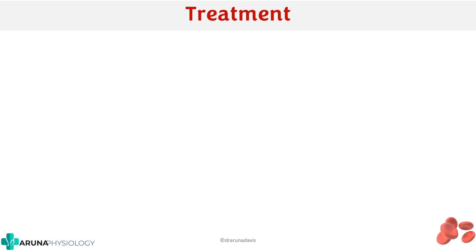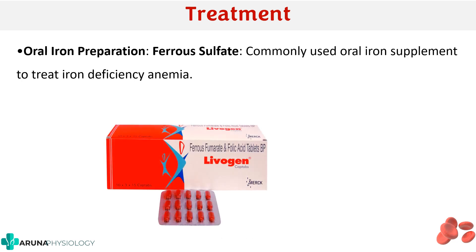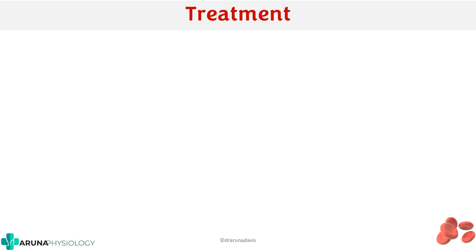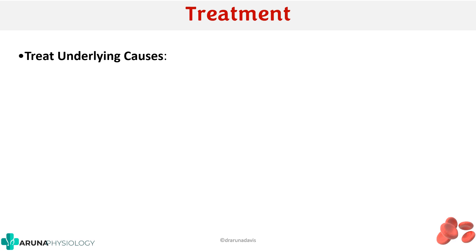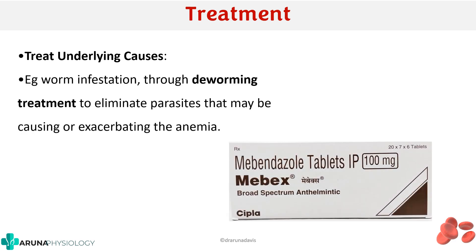The most common treatment is oral iron supplements, such as ferrous sulfate, for those diagnosed with iron deficiency anemia. In severely anemic patients, parenteral treatment with iron dextran complex can be given as a deep intramuscular injection. Any underlying causes must also be treated — for example, if a parasitic worm infestation is causing iron deficiency, deworming treatment is required to eliminate the parasites exacerbating the anemia.